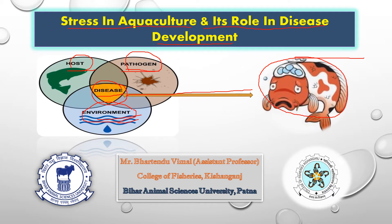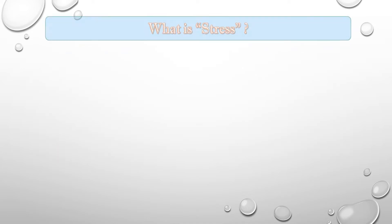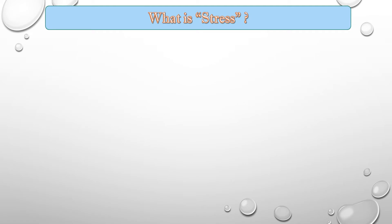When this imbalance occurs, it leads to a disease outbreak within fish when fish get immunocompromised. Under this topic, we are going to learn about stress and its response, the factors associated with stress, and their role in disease development.